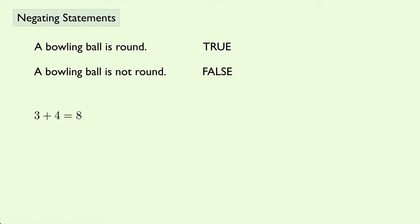Three plus four equals eight — that would be false. Now if we wanted the negation of this statement, we could say three plus four does not equal eight, and that changes the truth value to true.